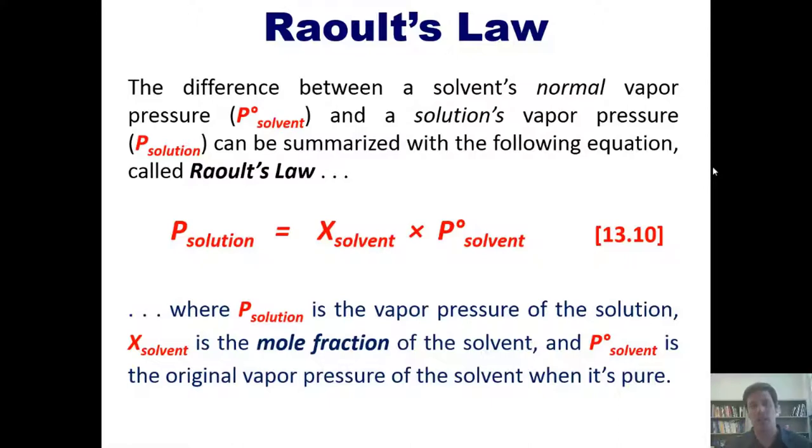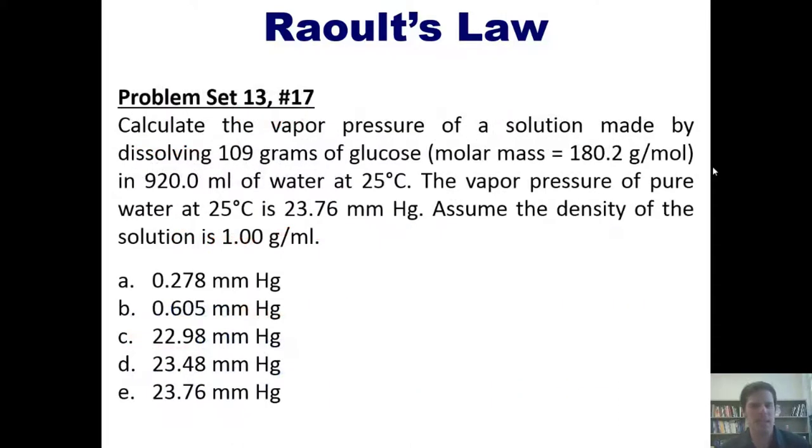Let's take a look at a Raoult's law problem. Calculate the vapor pressure of a solution made by dissolving 109 grams of glucose in 920 milliliters of water at 25°C. The vapor pressure of pure water is given. Assume the density of the solution is 1 g/mL. I'm not going to answer that for you here, but I'll post a link to a separate video which you're welcome to check out.